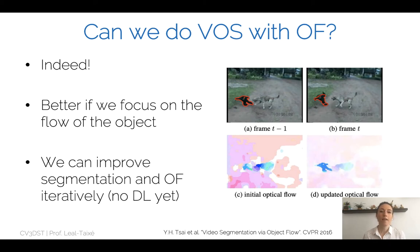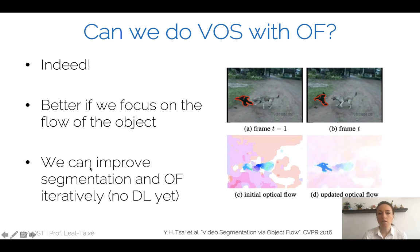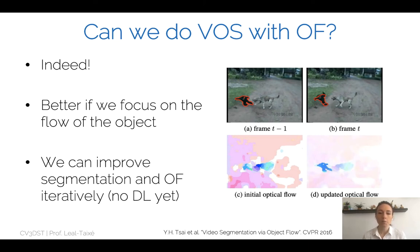Can we use optical flow to do video object segmentation? We can segment the object based on its flow. One can improve segmentation by improving optical flow, and improve optical flow by improving segmentation. Once we know the objects moving in the scene, we can improve predicted optical flow to obtain better boundaries around objects. A paper proposed to iteratively improve segmentation and optical flow — and this was the state of the art in 2016, before a paradigm change.